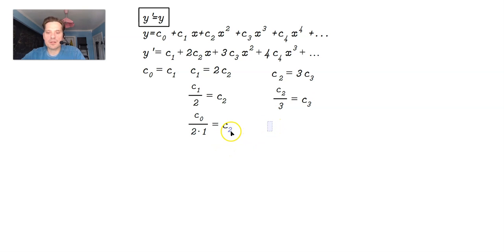Why would I do that? Because c sub 2 is already known to be c sub 0 over 2 times 1. So that means I can write c sub 0 over 3 times 2 times 1 as the value of c sub 3.